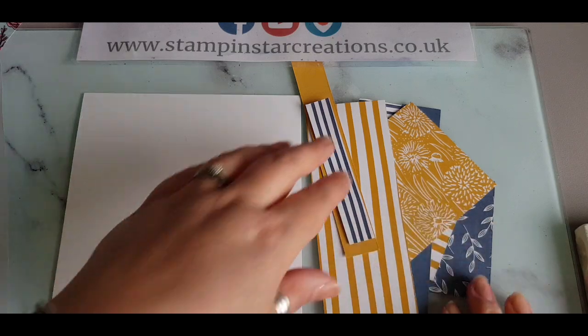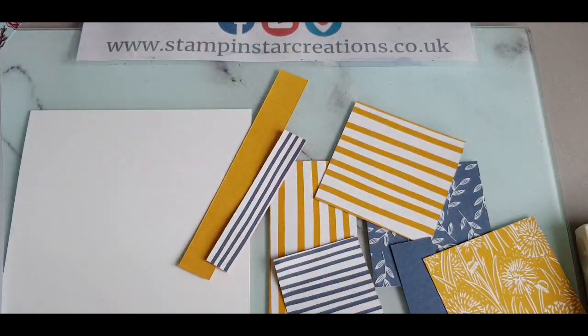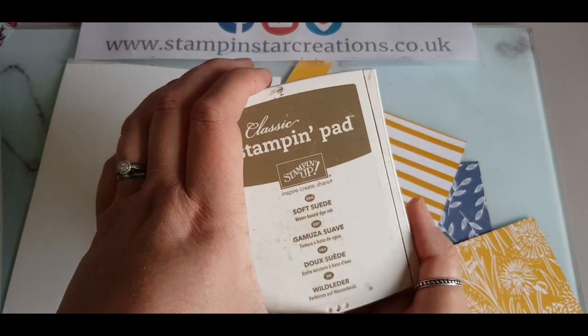So I've got here some scraps and some cut-off pieces from the Dandy Garden Designer Series Paper and I wanted to concentrate on these colours with the Misty Moonlight and the Bumblebee.